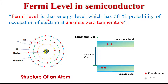Fermi level is the highest energy level which has 50% probability of occupation of an electron at absolute zero degree temperature. To understand the concept of Fermi level, here I will give a brief introduction of atomic structure. We know that every object in the universe is made up of atoms.